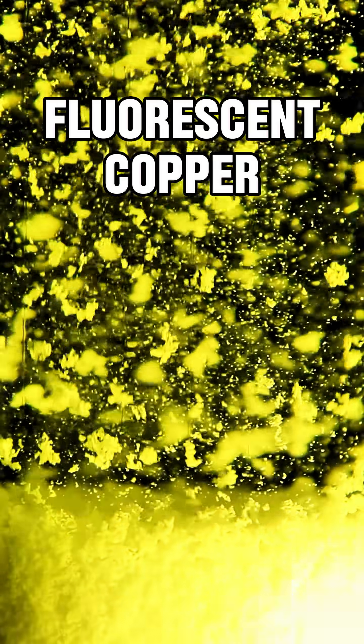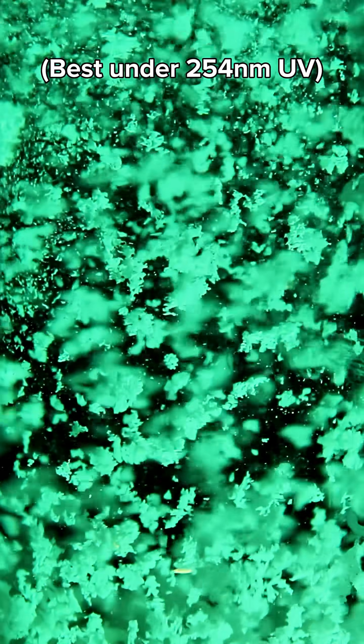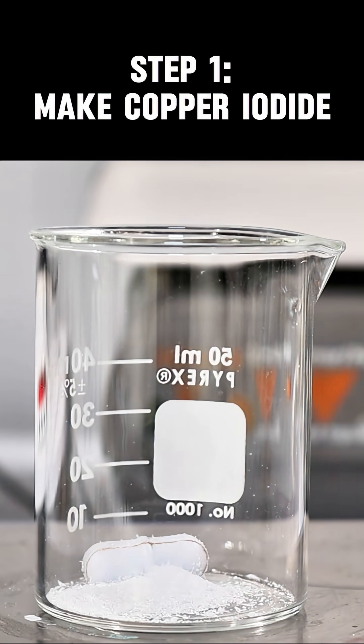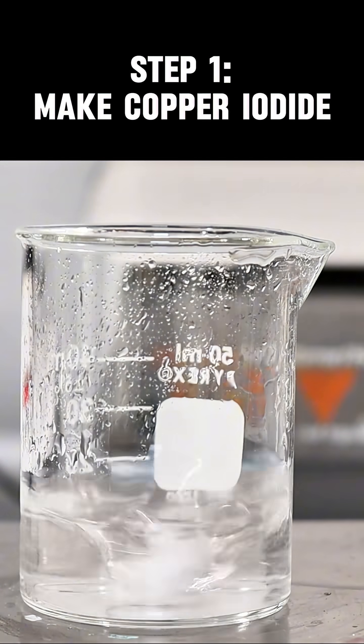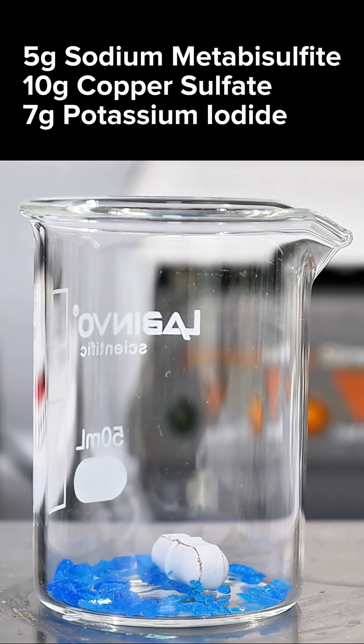Did you know that you can turn ordinary copper into a super bright fluorescent powder? To make this chemical the first thing you need is copper iodide, which I need to make myself from copper sulfate since it's not really something you can easily buy.